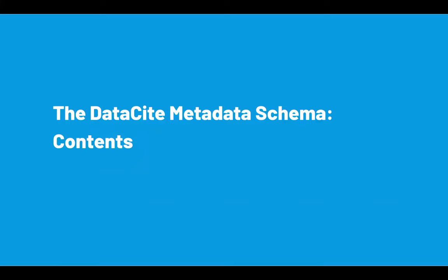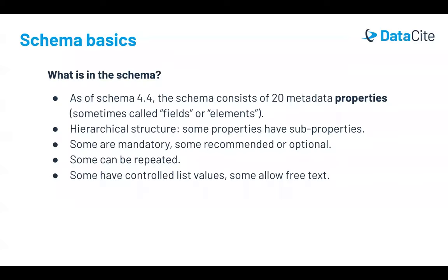Let's now look at the structure of the Datasite Metadata Schema, including the required, recommended, and optional properties. The schema has 20 top-level metadata properties, which are sometimes called fields or elements. There is a hierarchical structure where some of these properties have subproperties. Some of the properties are mandatory, whereas others are recommended or optional.